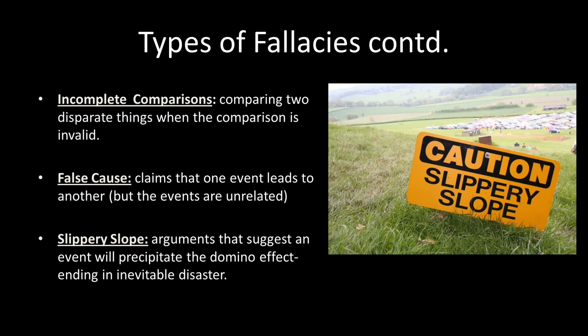The slippery slope fallacy suggests a domino effect leading to disaster: if you do this, then this will happen, which will lead to this, and so on — essentially a chain of false cause fallacies. For a slippery slope to be valid, there has to be evidence and support between every event mentioned to actually explain why we would end up in a disaster scenario. You can't just make those jumps without evidence.